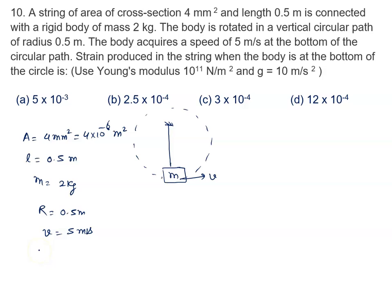If you draw the FBD here, the tension is acting T and here the weight is acting Mg. So we can write T minus Mg is given by Mv square upon R, or T is given by Mg plus Mv square upon R.